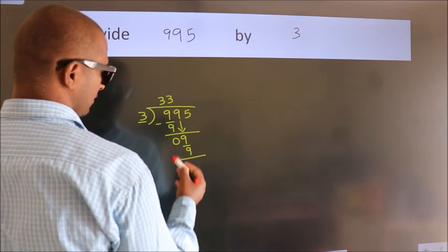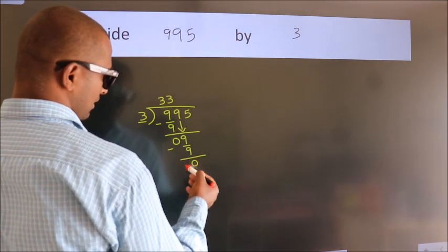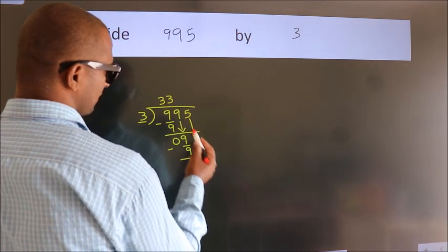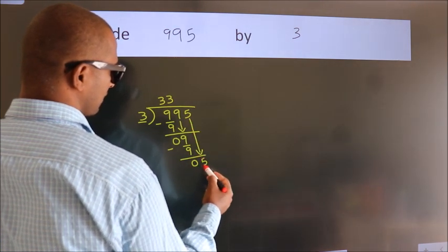Now, we subtract. We get 0. After this, bring down the beside number. So 5 down.